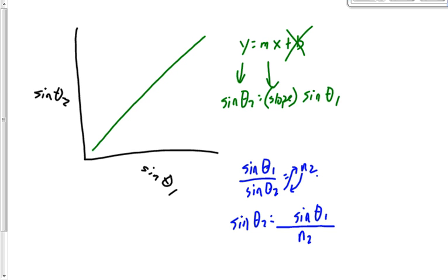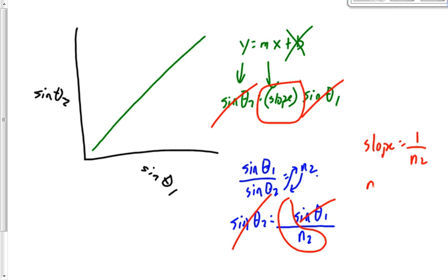Cross off things that appear in both. What are we left with? The slope on the graph equation is equal to what? 1 over n2. So we're going to say that n2 is equal to 1 over the slope, or n2 is equal to the inverse of the slope.